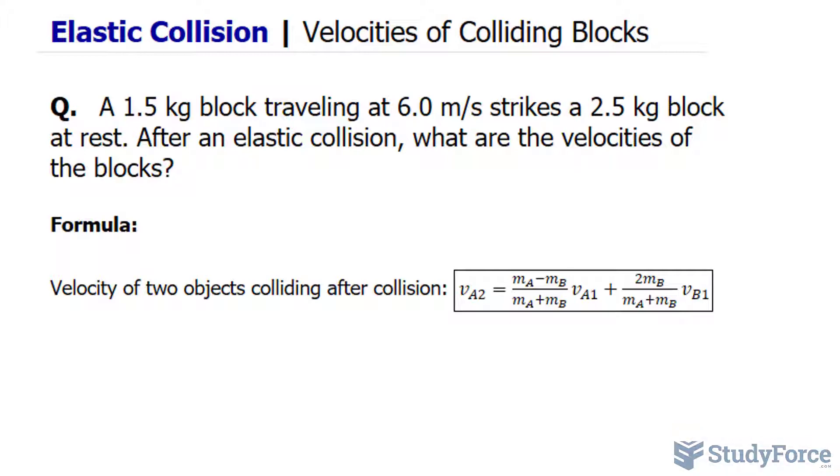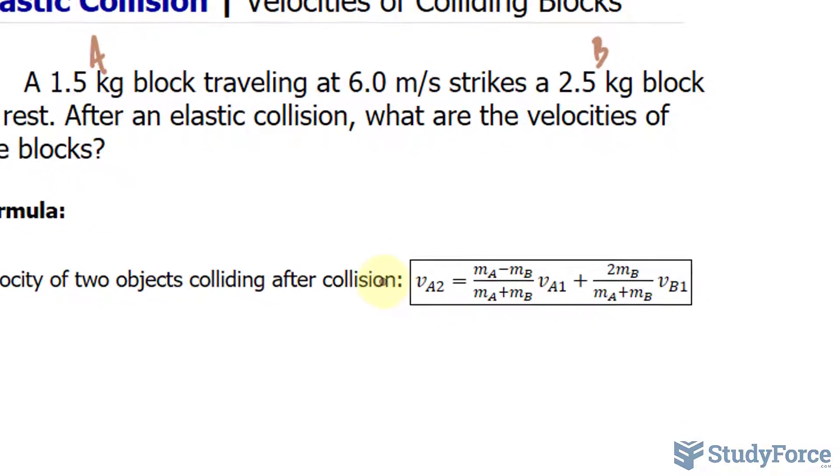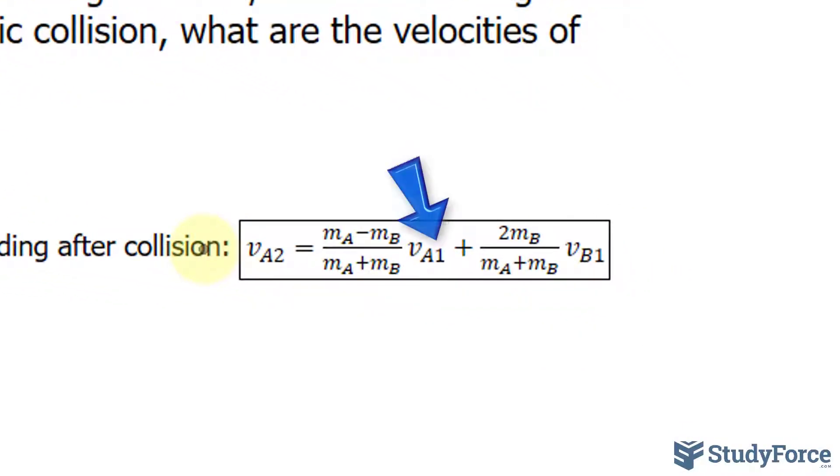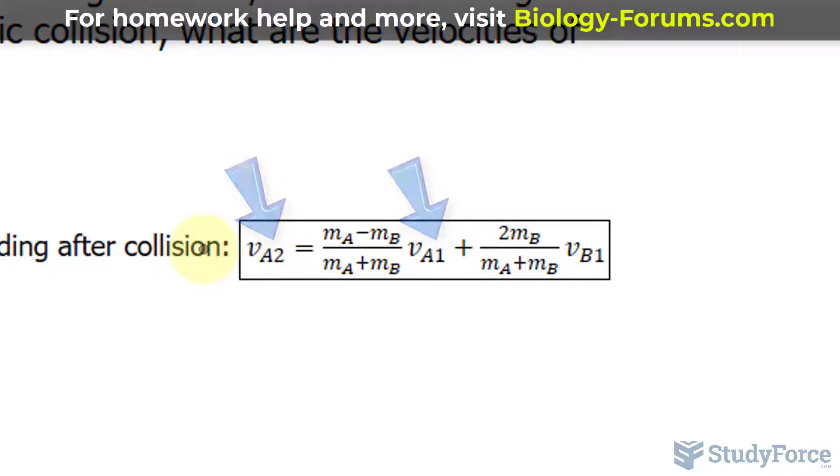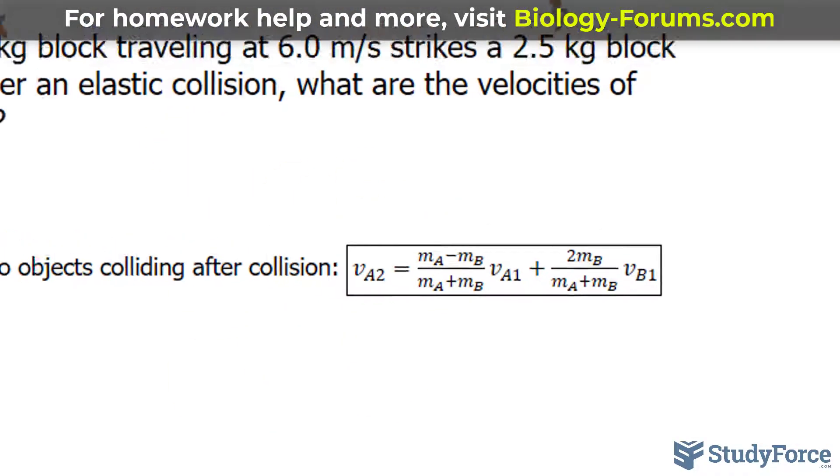To calculate the velocity of two objects colliding after a collision, you need to remember this formula. So here we have two objects, let's call the very first object A, so that's the 1.5 kilogram block. And the second object we'll call B, just so that it corresponds to the formula here. Before the collision, you label it with a subscript 1, and after the collision you label it with a subscript 2. And that's what accounts for the ones and twos that you find in this formula.